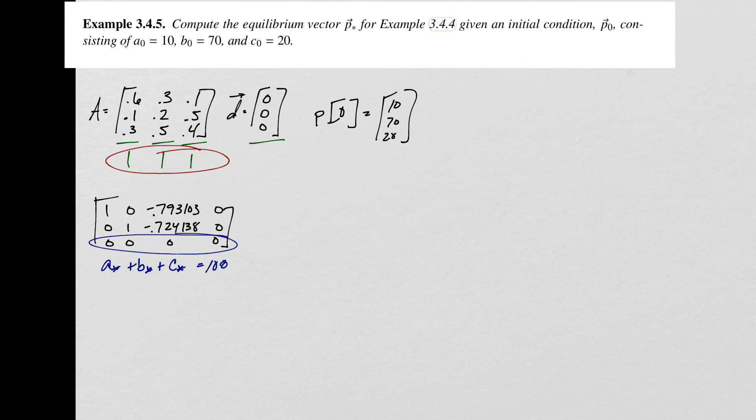We can replace this with information that A star plus B star plus C star is going to equal 100, because there's always going to be 100 people in this system. If I take the coefficients of this and rewrite it in here, I put a 1, 1, 1, and 100 in. Now I've got an equation that's no longer redundant. It's going to add some value to this system. I can row reduce this augmented matrix here. When I do, it's going to give me a unique solution now for this system. It's going to be one of the infinitely many equilibrium vectors for the initial problem, but it's going to be unique to our initial conditions that started with 10, 70, and 20.